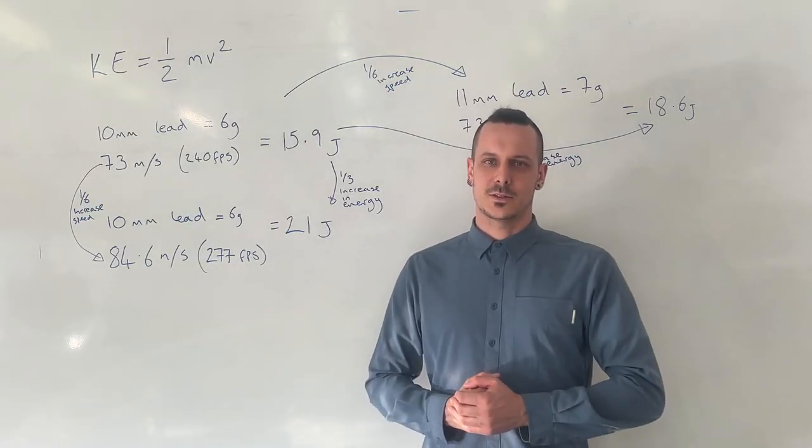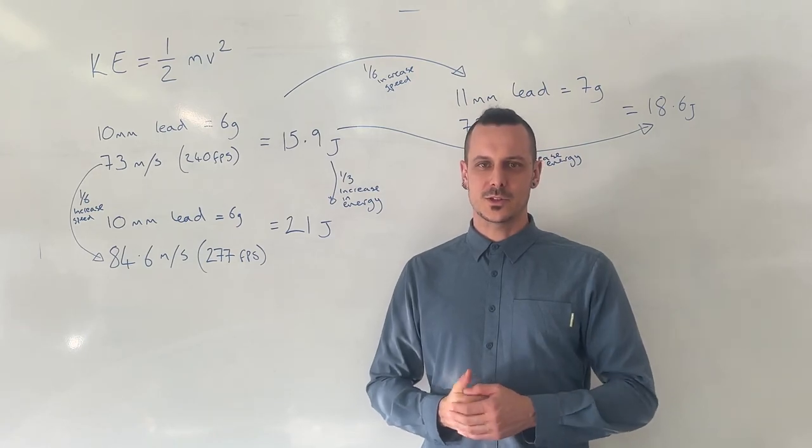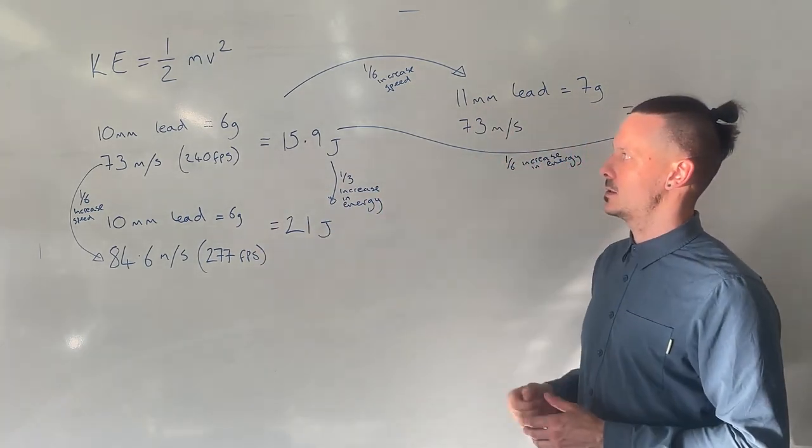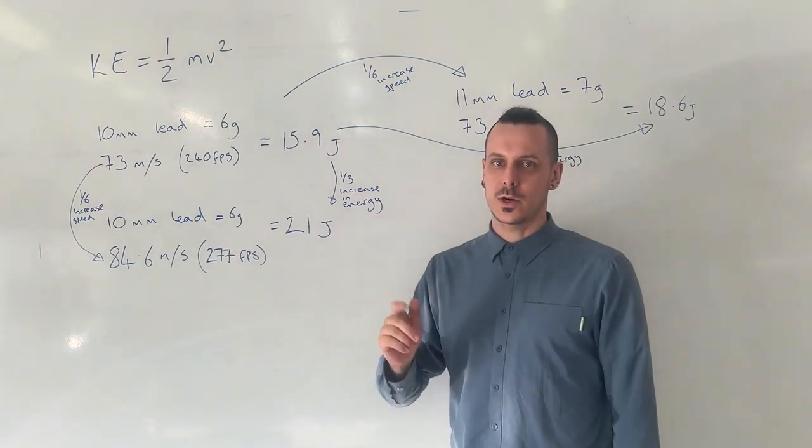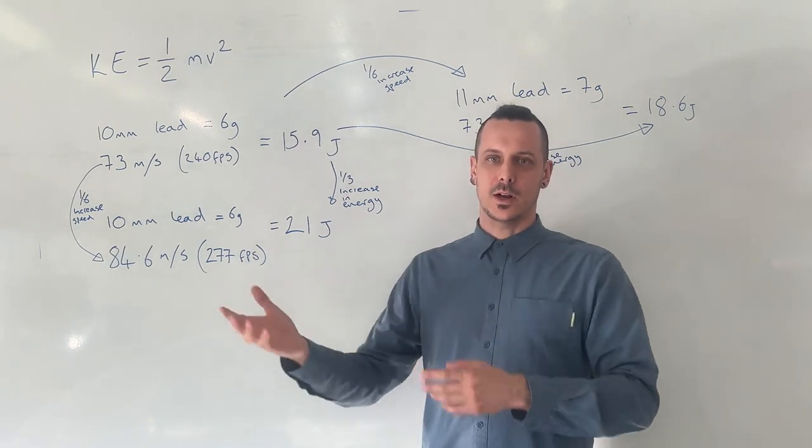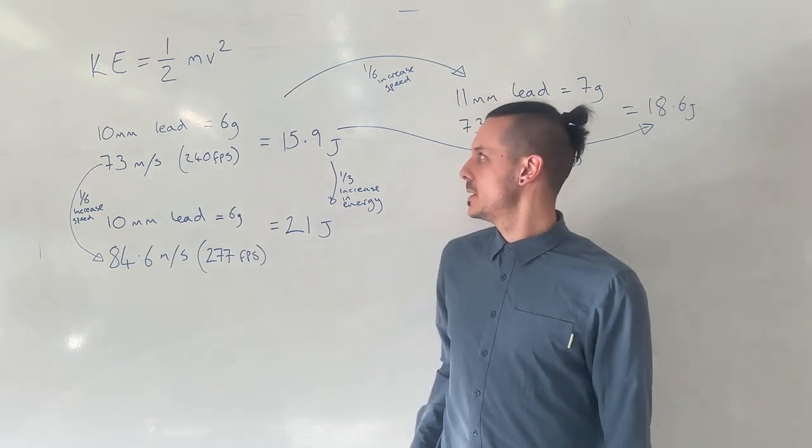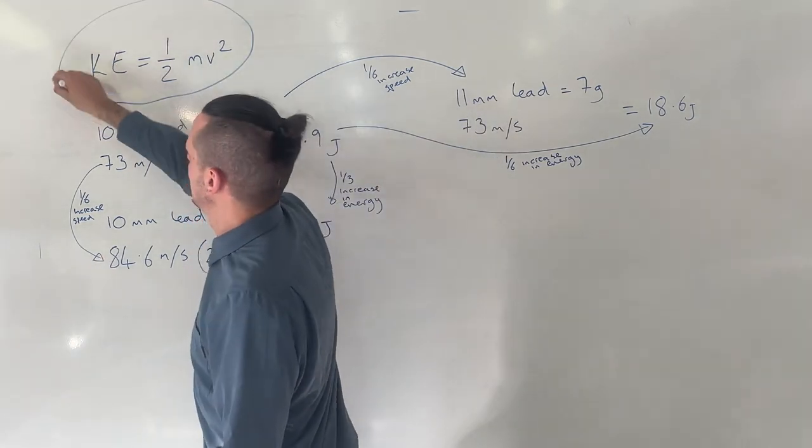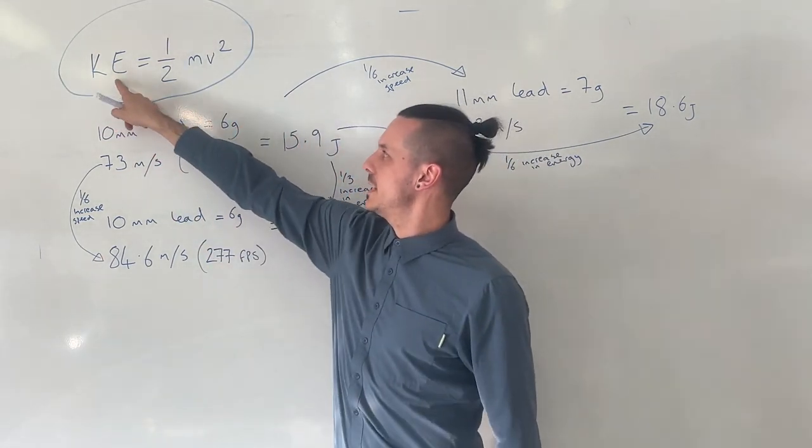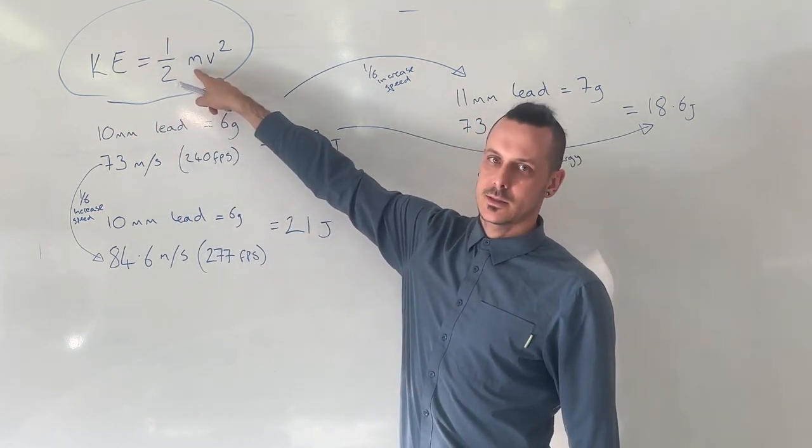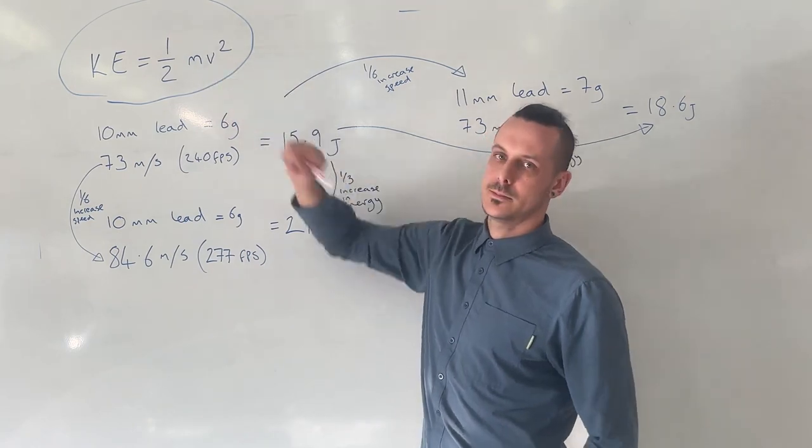So one of my favorite things about slingshots from a scientific point of view is that there's so much going on. Don't worry about this, I'll talk through it. We're talking about how much energy does a moving object contain, and that is determined by this formula here. Basically the amount of kinetic energy is equal to half of the mass times the velocity squared.